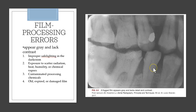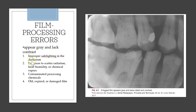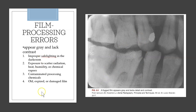Looking at some radiograph images: a gray image lacking contrast is a fogged film. This can happen due to incorrect darkroom lighting, scatter radiation, heat, humidity, contaminated chemicals, or an old film.